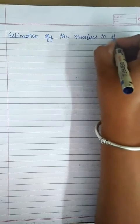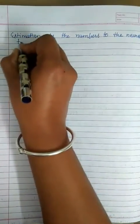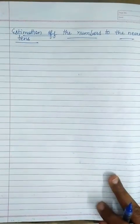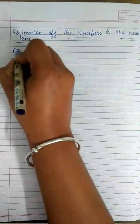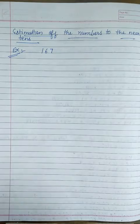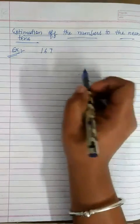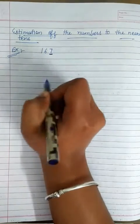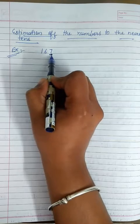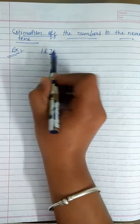Estimation of numbers to the nearest tens. For this we have to follow some steps. Let us take an example: 167. We have to estimate this number to the nearest tens. First of all, you have to check the one's digit. Here the one's digit is 7.